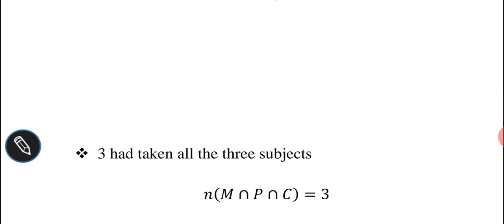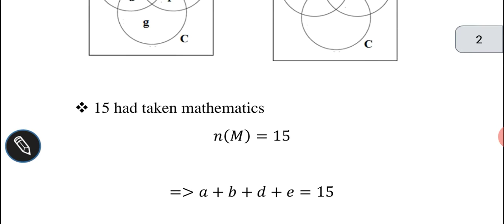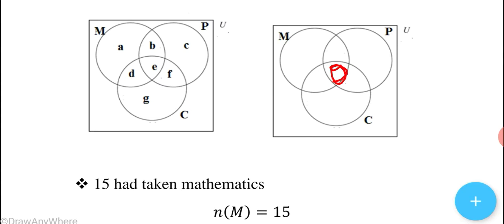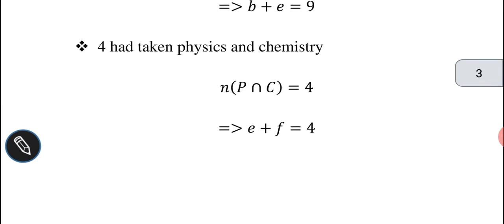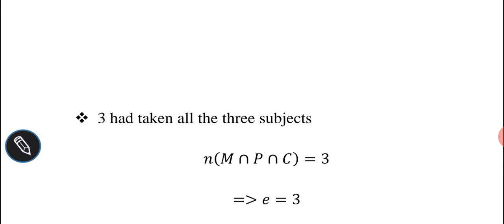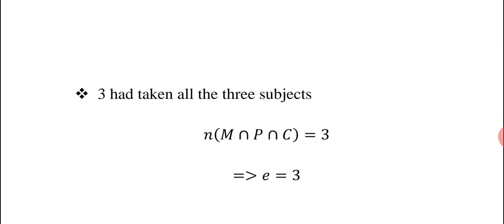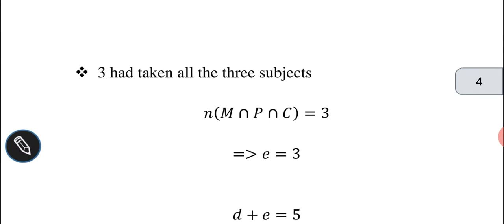3 had taken all 3 subjects. The area covering all 3 subjects in the Venn diagram is region E, so N(M ∩ P ∩ C) = 3, meaning E = 3.